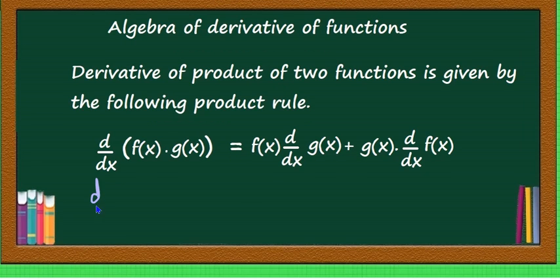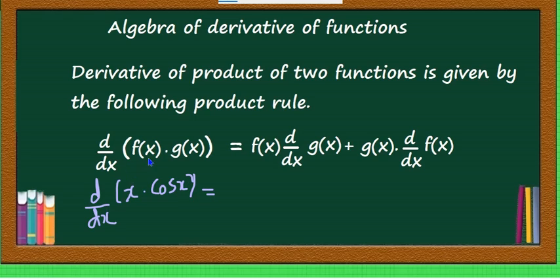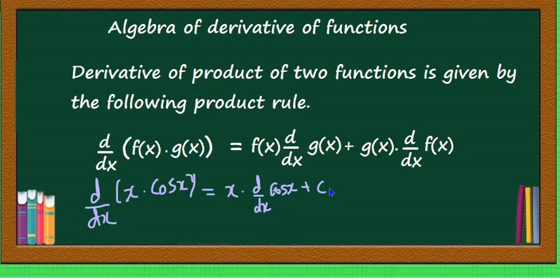For example, find d by dx of x into cos x — a product of two functions. Applying the product rule: first function x into d by dx of cos x, plus second function cos x into d by dx of x. What is f of x? x. What is g of x? cos x. You know the derivatives of cos x and x.